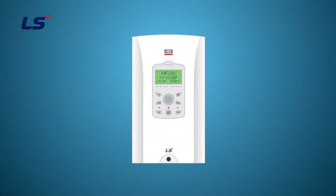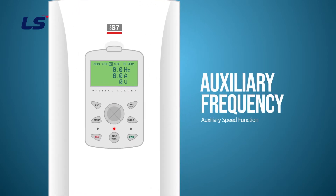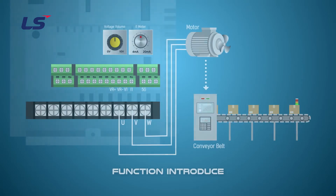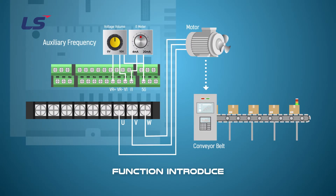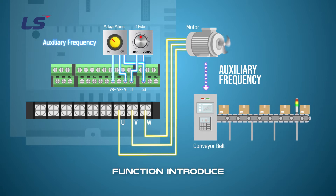Hello, let's look at the IS7 inverter auxiliary frequency function through this video. Auxiliary speed operation can achieve precise frequency control using analog or pulse signals. When the main speed or frequency is adjusted according to the frequency reference and an auxiliary speed signal is entered, the motor speed can be precisely controlled according to the auxiliary signal input value.